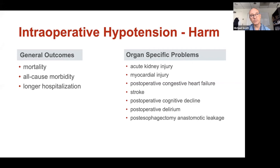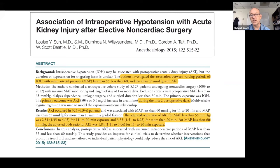With the organ-specific problems, there's been a lot of focus recently on AKI because we can map that, and more recently myocardial injury because of the sensitive troponins we can now use. But there's also a link between intraoperative hypotension and postoperative congestive heart failure, stroke, delirium, and cognitive decline. In general surgical patients, we know there's a relationship between anastomotic leak — particularly in esophagectomy — and mean arterial pressure drop.